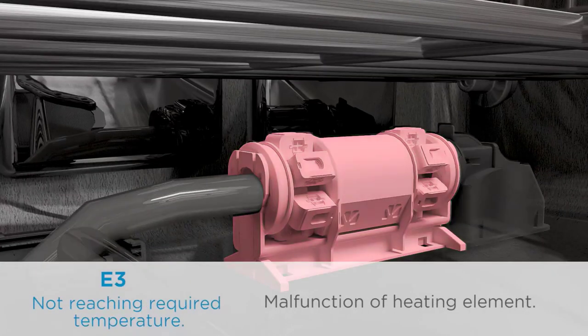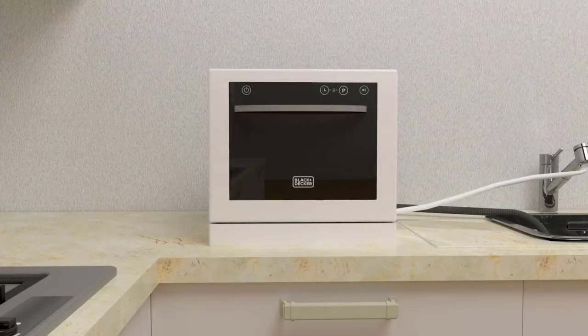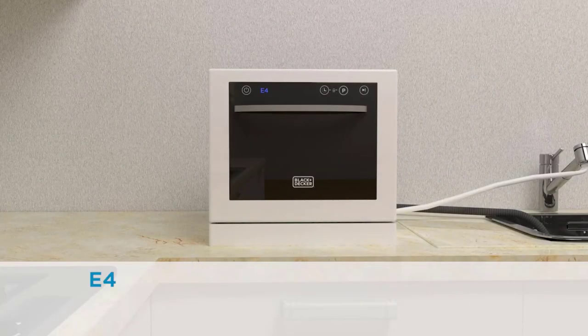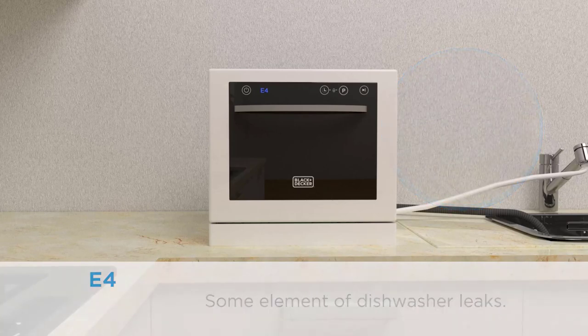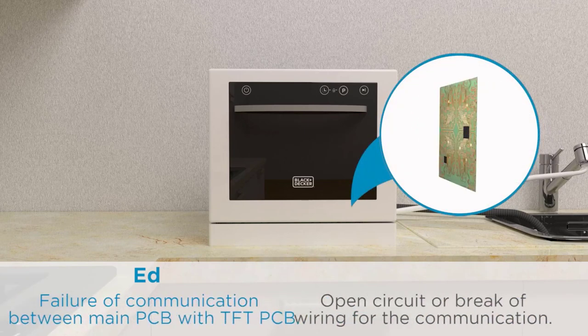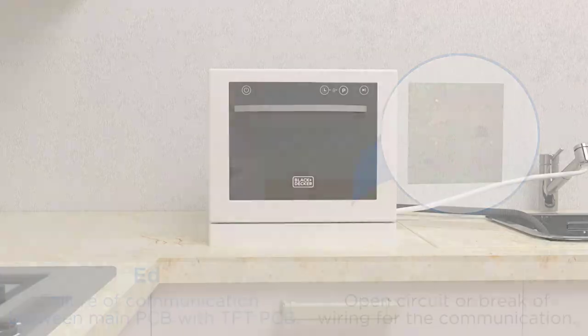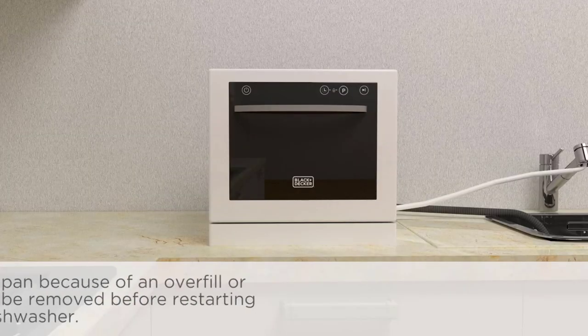The LED display is easy to use, allowing you to set your wash cycle and time with just a few taps. And with the child lock included, you can rest assured that your little ones won't accidentally start the dishwasher when you're not looking. One of the standout features of this dishwasher is the Quick Connect assembly, which means you can hook it up to your faucet without the need for direct plumbing or permanent installation.